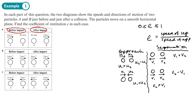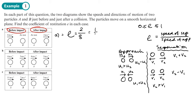Rather than memorising all these rules, it's easier just to work it out using common sense. For example A: one particle is at rest, the other moves away at 2, so they separate at 2 metres per second. They approach at 8 because the other was at rest. So e equals 2 over 8, which is a quarter.